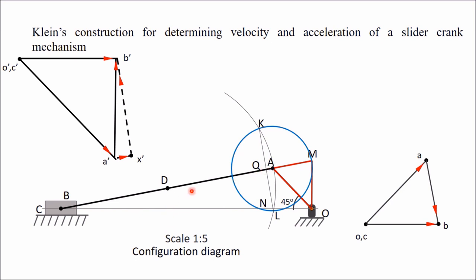Join K to L. This line intersects the connecting rod at point Q and intersects the path of the slider (the horizontal line) at point N. Then join O to N, N to Q, Q to A, and N to A. Triangle OAN and triangle OAB are similar, so this diagram represents the acceleration of different elements in Klein's construction.